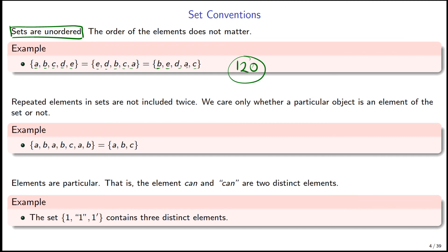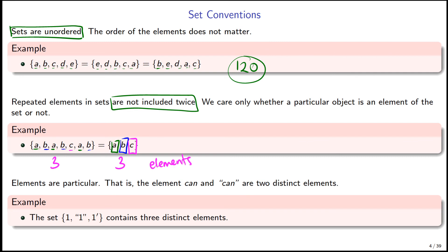Another convention is that when we have multiple occurrences of the same element, we do not include them twice. For example, in the set {A, B, A, B, C, A, B}, A is repeated three times, but we don't care how many times it appears — we just care whether A is in the set at all, so we only write it once. Same with B repeated three times. Both sets only have three distinct elements: A, B, and C.